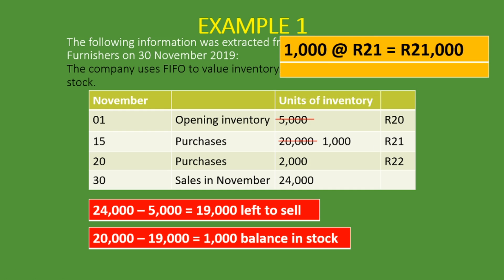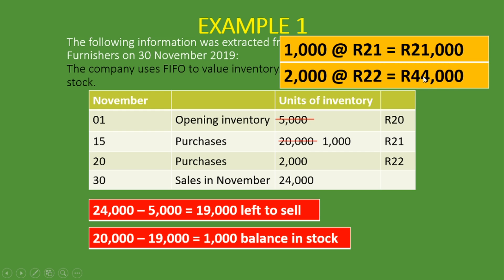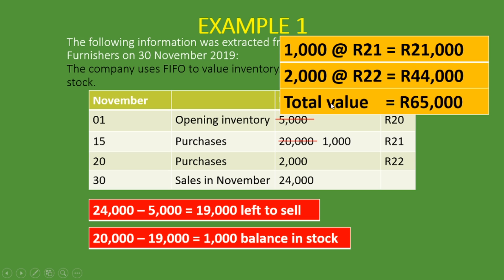So: 1,000 units at 21 Rand gives us a value of 21,000 Rand. And we are left with 2,000 units at 22 Rand, which gives us a value of 44,000 Rand. These two together are the value of closing stock. Adding them together, the total value of closing stock is 65,000 Rand. You can see how easy it is using the periodic system — you just know that you have to sell the earliest inventory first.